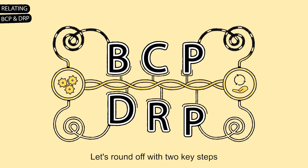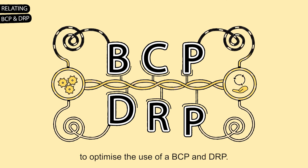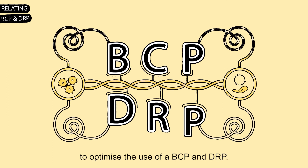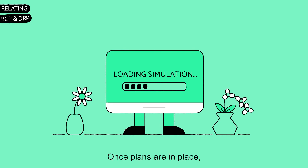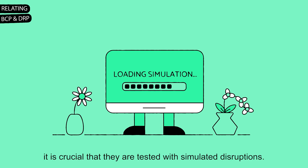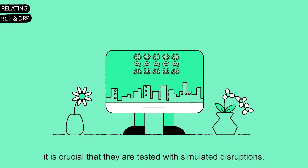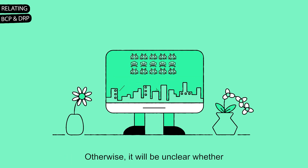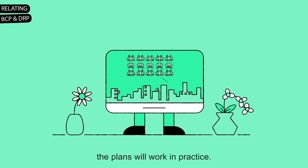Let's round off with two key steps to optimise the use of a BCP and DRP. Once plans are in place, it is crucial that they are tested with simulated disruptions. Otherwise, it will be unclear whether the plans will work in practice.